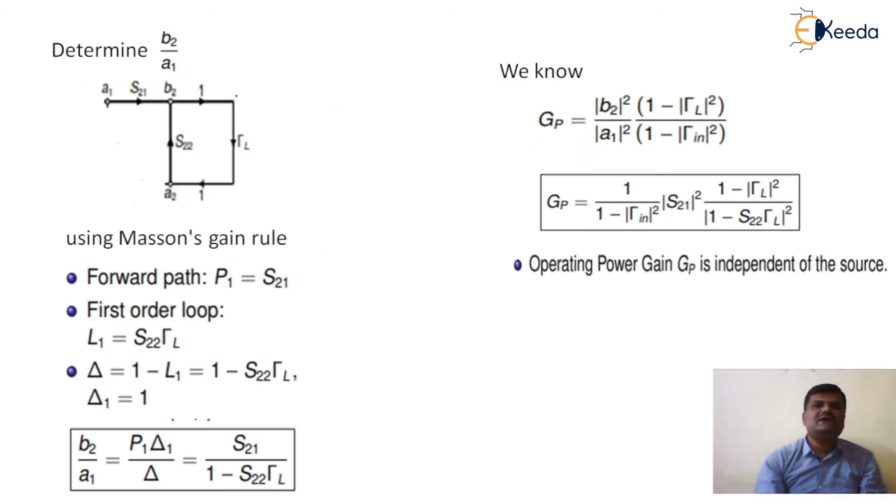Determine b2 by a1. For that purpose, we will take the help of a signal flow graph. This is a signal flow graph using Masson's gain formula. First, we will calculate forward path. There is one forward path, P1, which has a gain S21. So write P1 equal to S21.